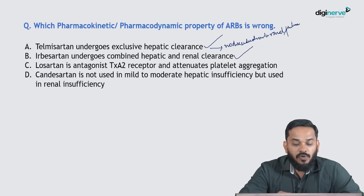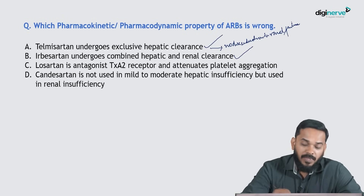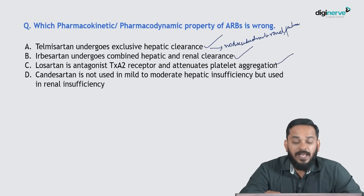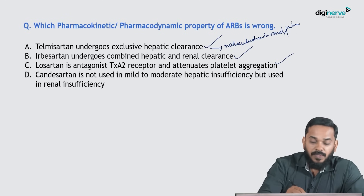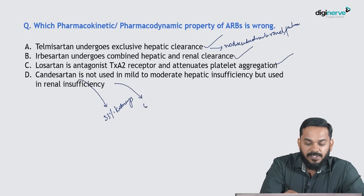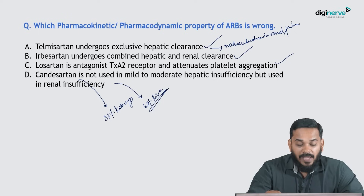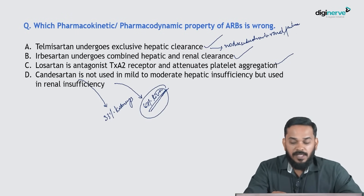Losartan is an antagonist of thromboxane A2 receptors and attenuates platelet aggregation — that is also true. Candesartan is stated as not used in mild-to-moderate hepatic insufficiency but used in renal insufficiency; however, 67% of candesartan is eliminated by the liver. Though the major proportion is eliminated by the liver, candesartan cannot be used in renal insufficiency due to accumulation. So the correct answer is option D.